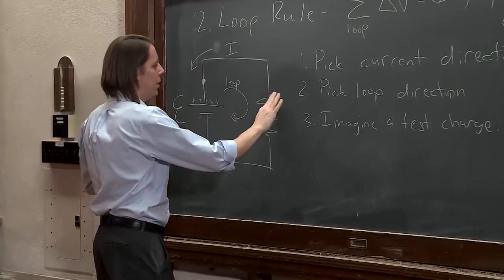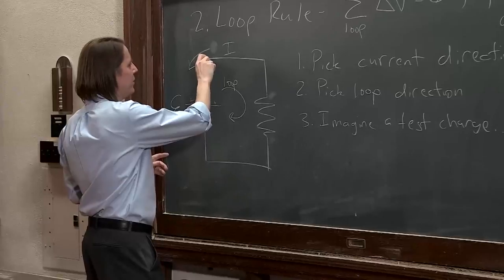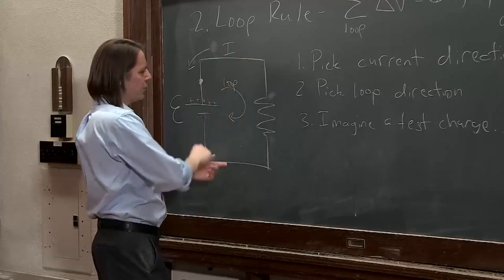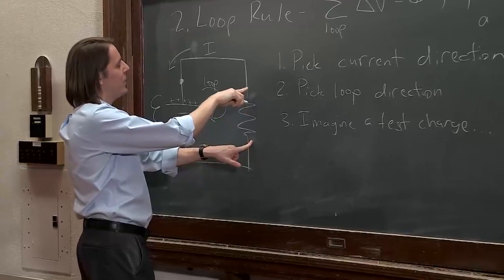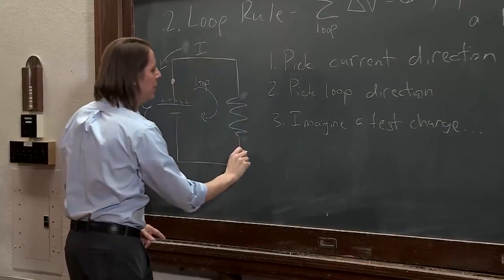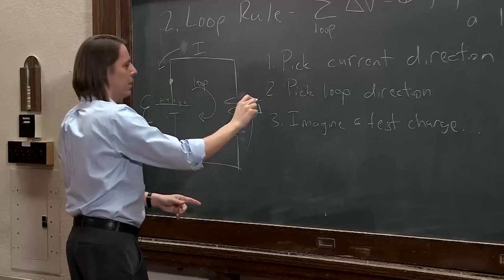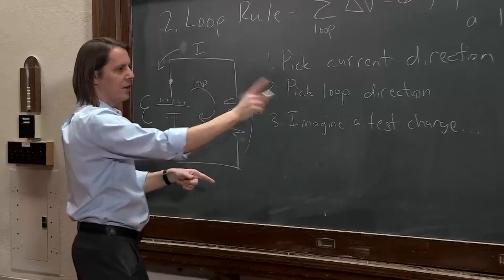and I'm a test charge walking this way, I'm going against the current. If the current's going that way, then this will be the high potential side, and this will be the low potential side of the resistor. So whenever you go against the current in your loop, then it's plus IR.